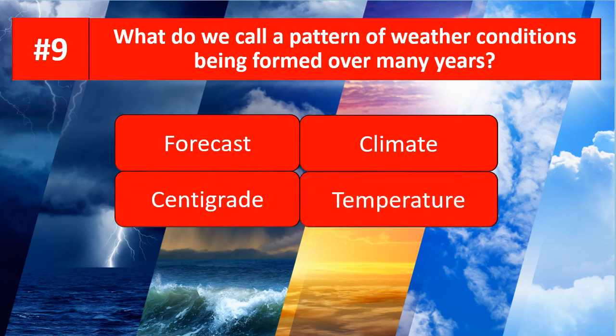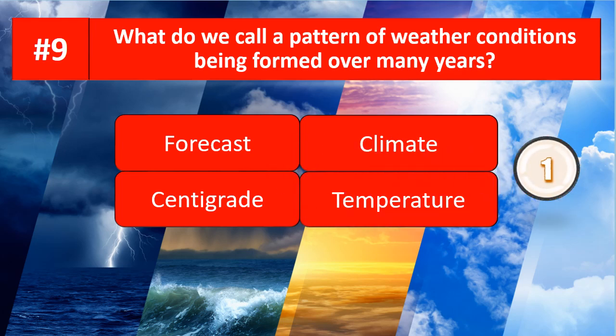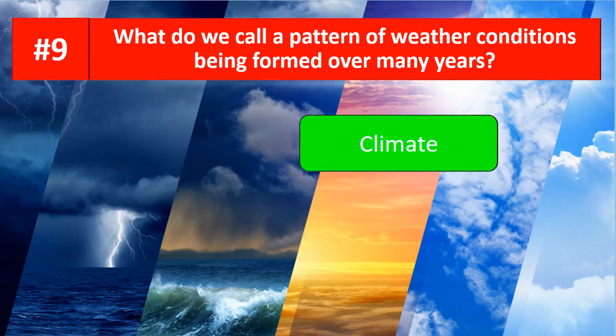This one is very interesting. What do we call a pattern of weather conditions formed over many years in an area? Is it forecast, climate, centigrade, or temperature? The answer is climate.